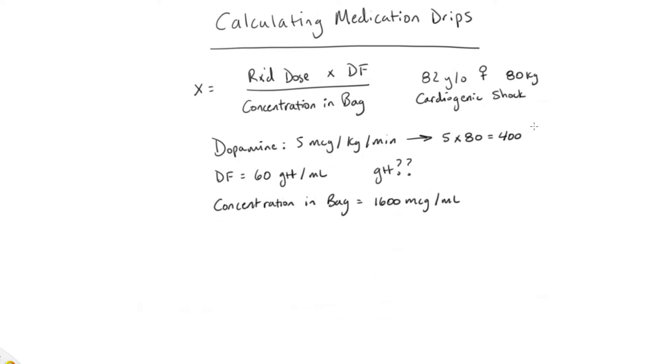So now we can start entering things into our formula. So 400 micrograms per minute times our drip factor of 60 drops per mil is what goes on top. And then we put all of that over our concentration, which again is 1,600 micrograms per mil. When we multiply the numbers up top, 60 times 400 equals 24,000. And again, that goes over 1,600 at the bottom.